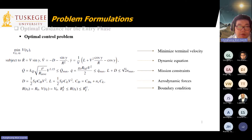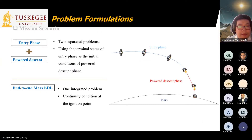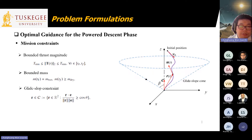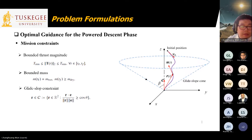The optimal control problem for the entry phase minimizes the terminal velocity, subject to the dynamic equations, mission constraints, aerodynamic forces, and boundary conditions. For the powered descent phase, the dynamics include the position vector, velocity vector, gravity, and thrust vectors. Mission constraints include bounded thrust magnitude — with maximum and minimum values — bounded mass, and a glide slope constraint requiring that the trajectory remain within the slope to prevent the lander from impacting the ground before landing.